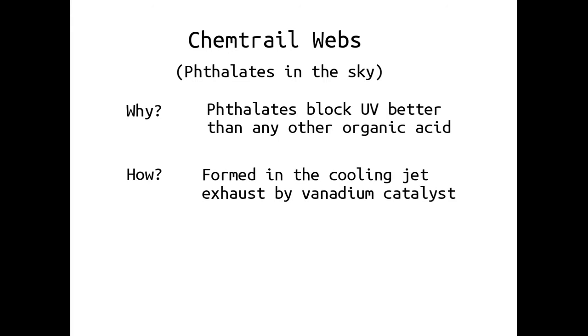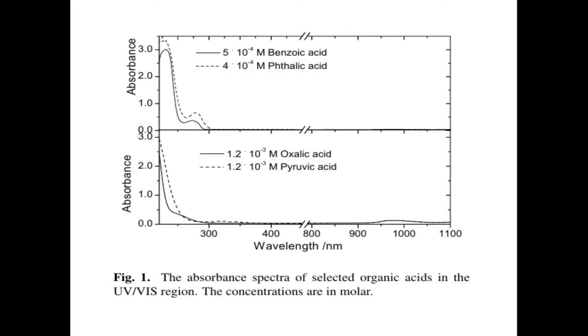How are they doing it? The phthalates are formed in the cooling jet exhaust due to a vanadium catalyst in the jet fuel. Here's an absorption spectra of selected organic acids, namely benzoic, phthalic, and oxalic acid.